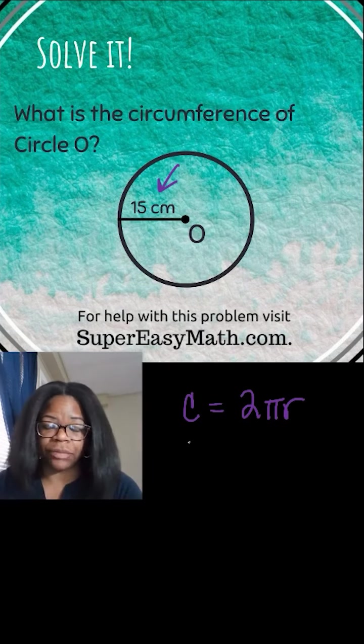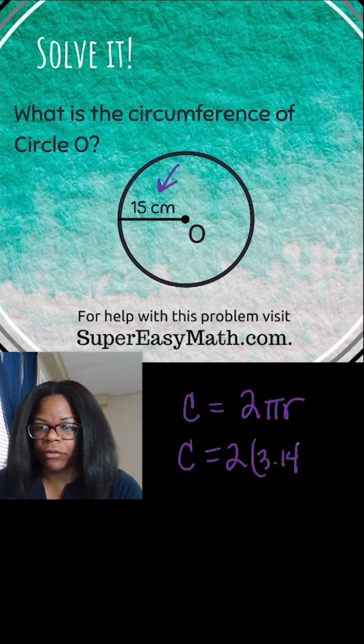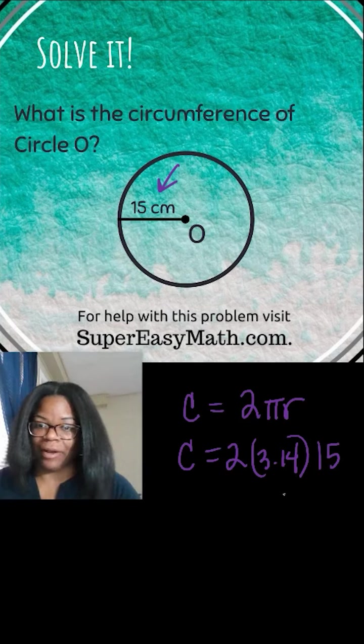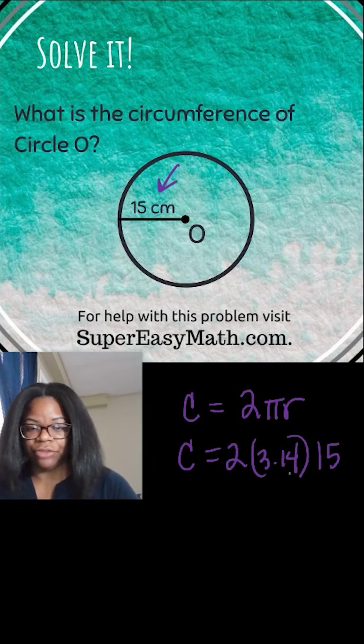But if you did want to actually put in 3.14 for pi, you would put C equals 2 times 3.14, and instead of r you're going to write your 15. So you have a value for everything that's up here, and you're going to multiply your 2 times your 3.14.